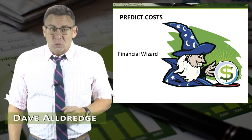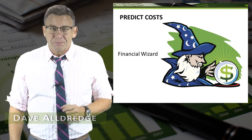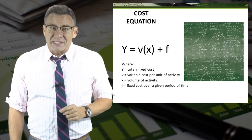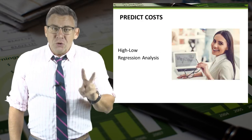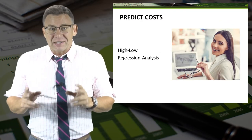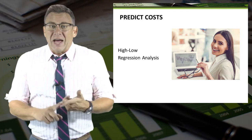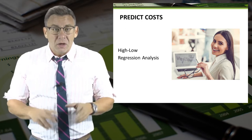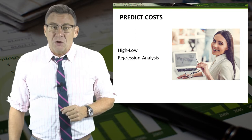You don't have to be a financial wizard to predict future costs, but you do need to know a company's cost equation. There are two primary methods used to predict costs at various levels of volume: the high-low method and regression analysis method. This short video will focus on the high-low method.